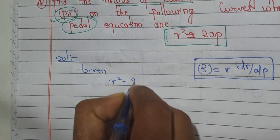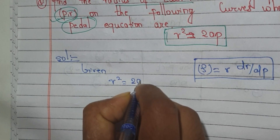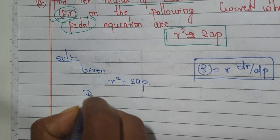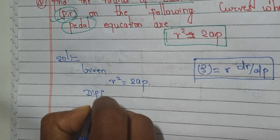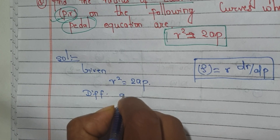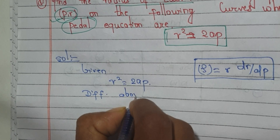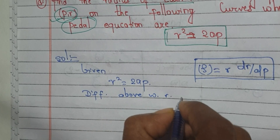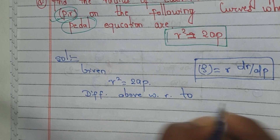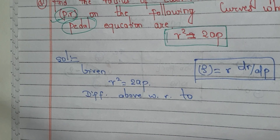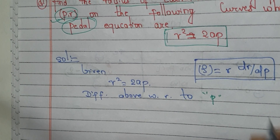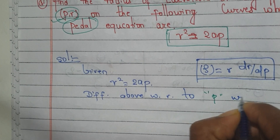r² = 2ap. Differentiating both sides with respect to p, we get: 2r·dr/dp = 2a.